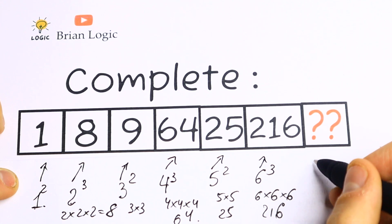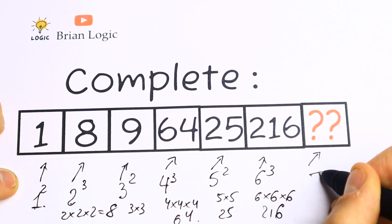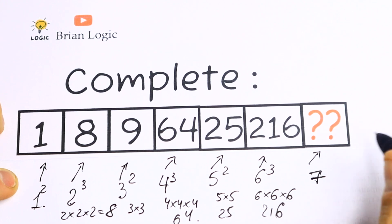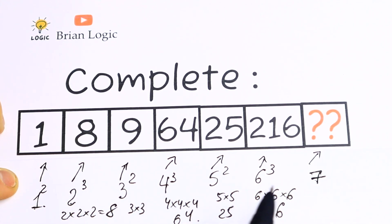It's not hard to see that the last number will be, the base of this number will be 7. But what about the power? As you can see right here we have a lot of powers. What's the pattern between all of these powers?